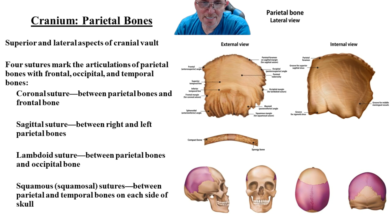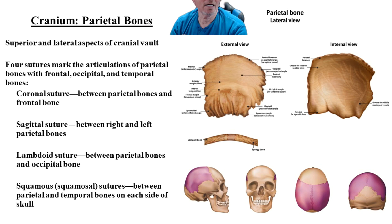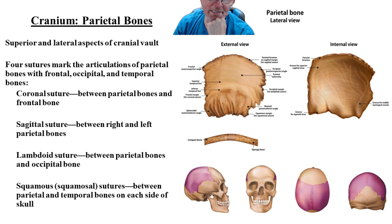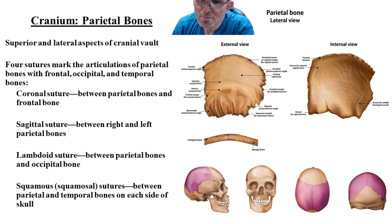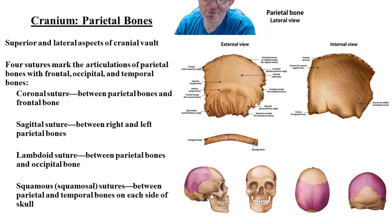The parietal bones occupy the top lateral parts of the skull. They're going to be behind the frontal bone, and the frontal bone is separated from the parietal by the coronal or frontal suture. The parietal bones are separated from the temporal bone by the squamous suture, and the right and left parietals themselves are separated by the sagittal suture.